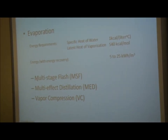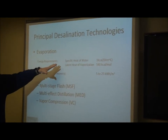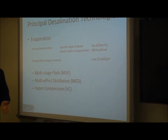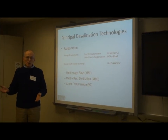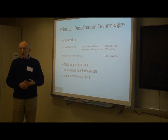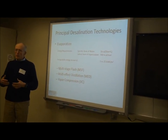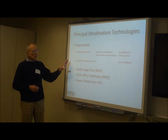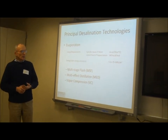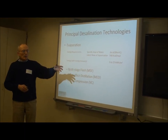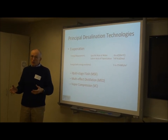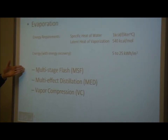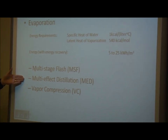Evaporative desalination is a very energy-intensive process, because heating water requires one kilocalorie of energy per liter per degree centigrade. To heat water from 30°C to the normal atmospheric boiling point of 100°C requires 70 kilocalories of energy, and then vaporizing the water requires even more energy. After engineering optimization, evaporative desalination plants nonetheless require 5 to 25 kilowatt-hours of energy per cubic meter of water produced. The three important types of evaporative techniques are multi-stage flash, multi-effect distillation, and vapor compression.